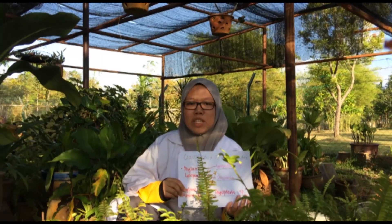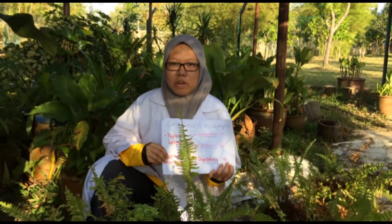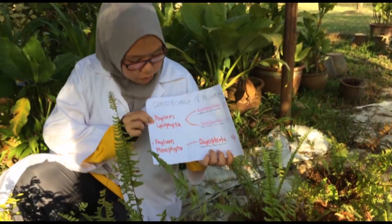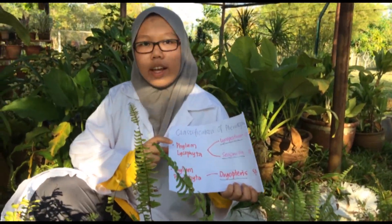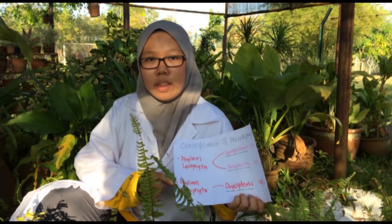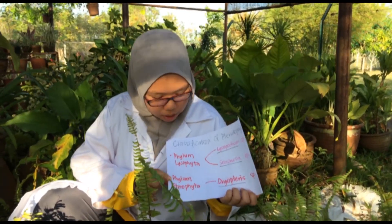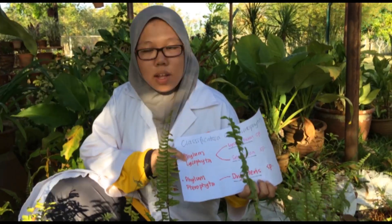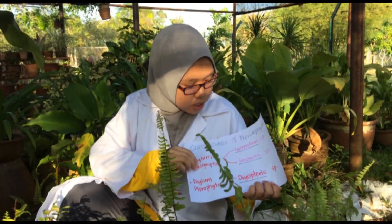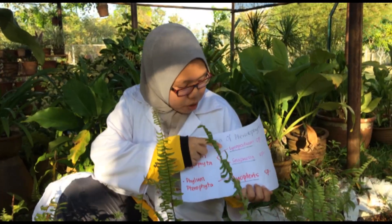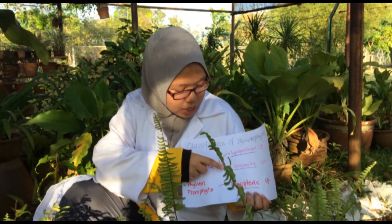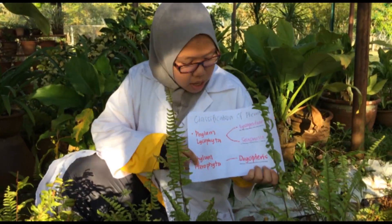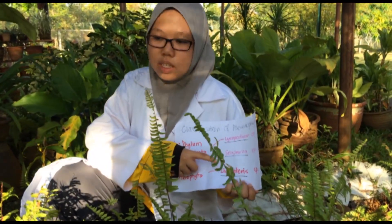We will explain to you about Pteridophyta. As we all know, Pteridophyta consists of two phyla: Phylum Lycophyta and Phylum Pterophyta. Phylum Lycophyta consists of two species, which are Lycopodium species and Selaginella species. While for Phylum Pterophyta, there is the Pteridophyta species.